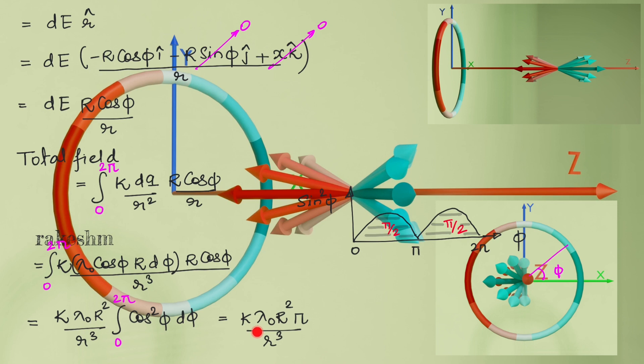So the final value of field is k lambda naught r square pi by r cube. Writing this in terms of known variables we get final answer as lambda naught r square by 4 epsilon naught into x square plus r square to the power 3 by 2 towards negative x.